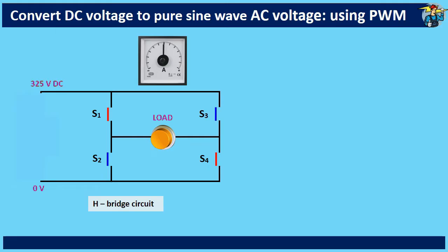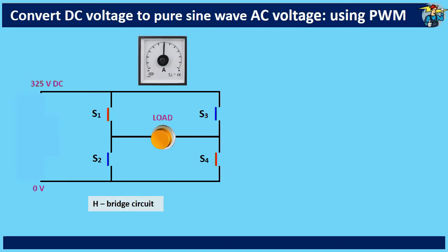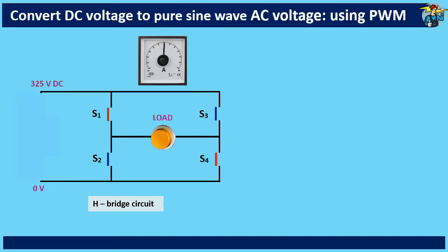When S1 and S4 switches are closed, DC current flows through the load from left to right. When S2 and S3 switches are closed, voltage reverses through the load terminals and current flows from right to left. The DC voltage is taken here as 325 volts, since the maximum voltage of the RMS AC voltage of 230 volts that we are going to produce is 325 volts.